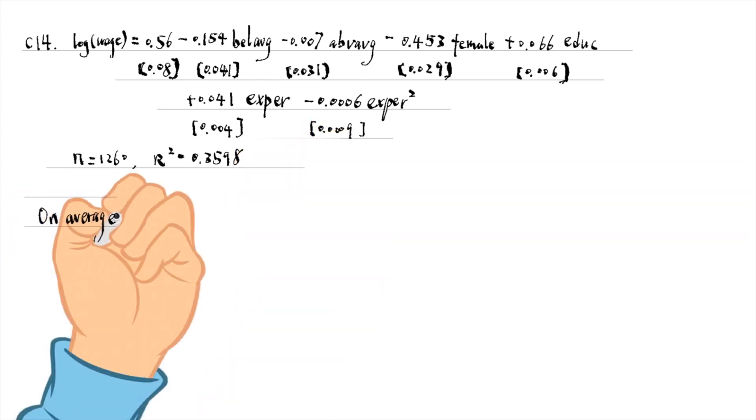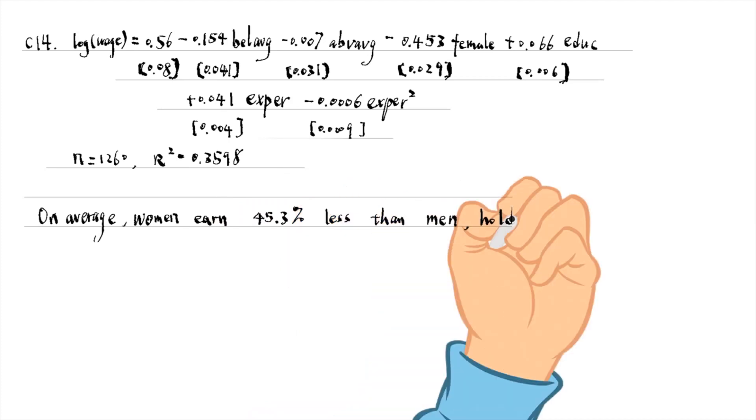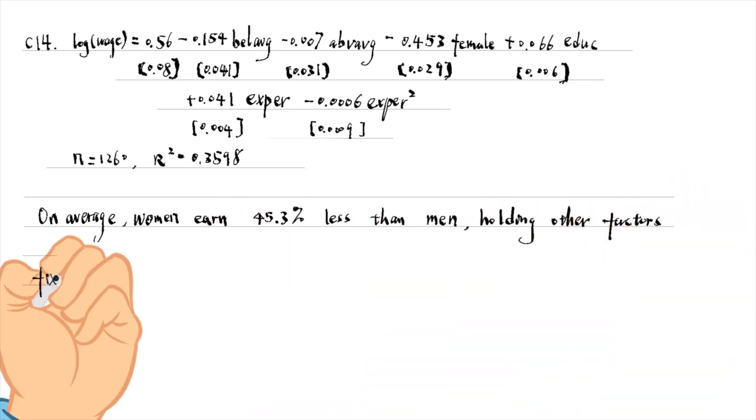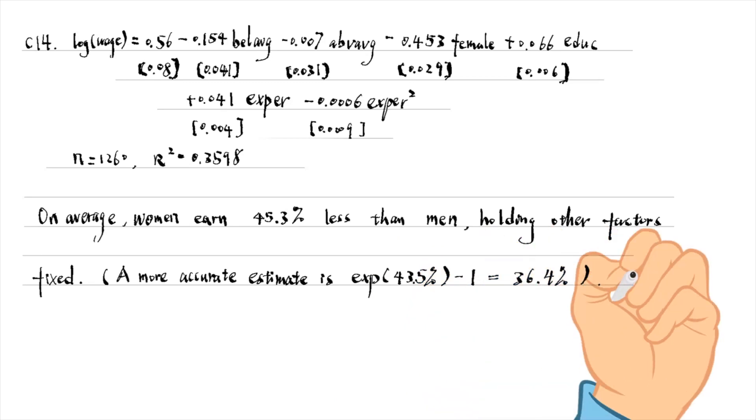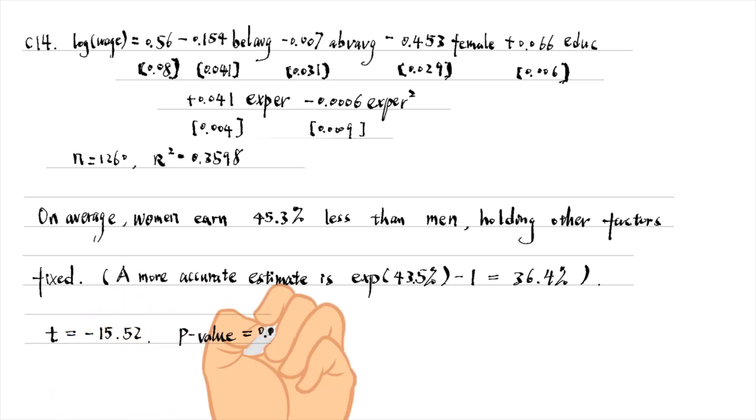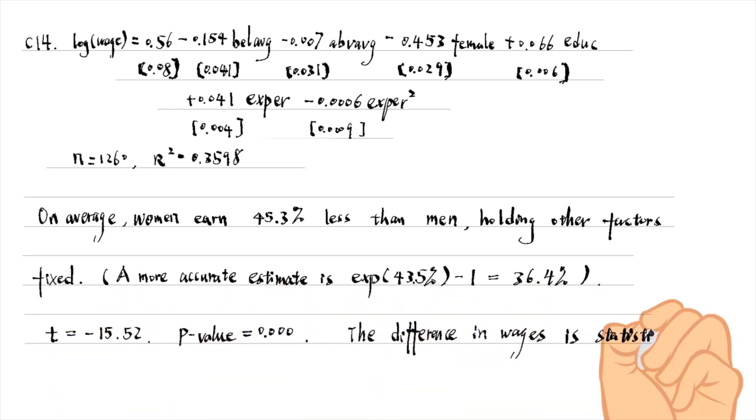Females earn less than males. On average, women earn 45.3% less than men, holding other factors fixed. A more accurate estimate is 36.4% less.